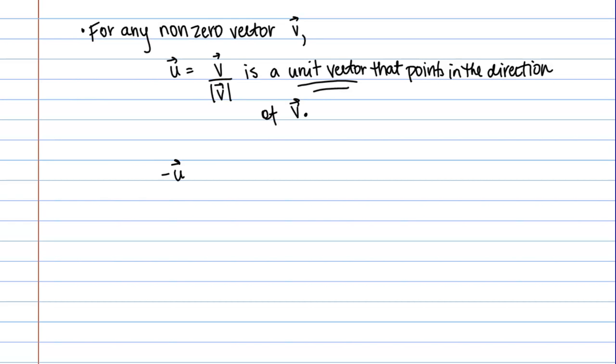Furthermore, negative u, which is simply negative v over magnitude of v, is also a unit vector. That makes sense, right? This is just the same as vector u, but just pointing in the exact opposite direction.